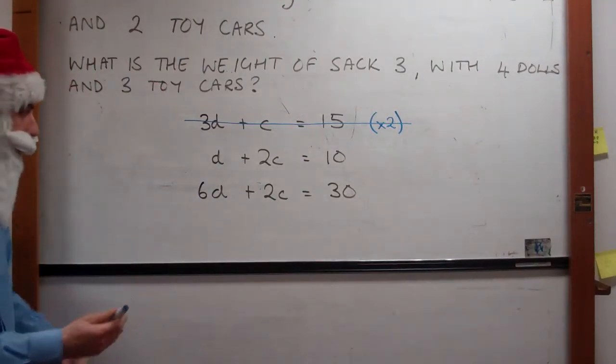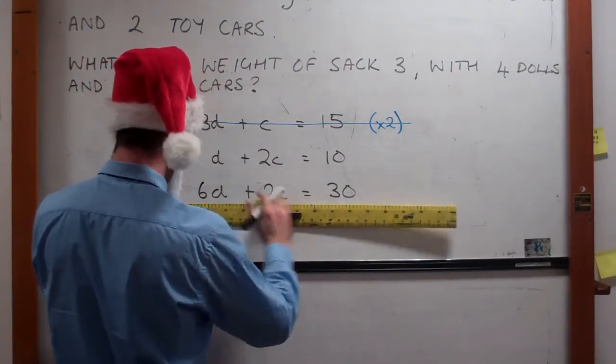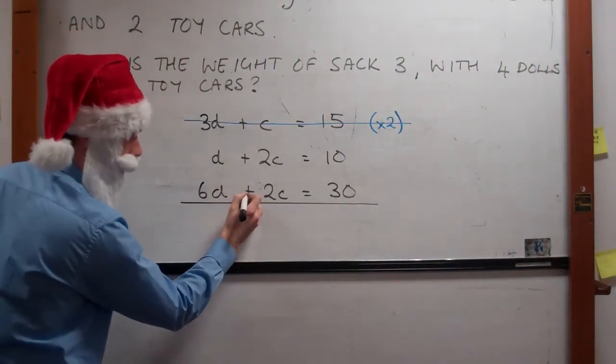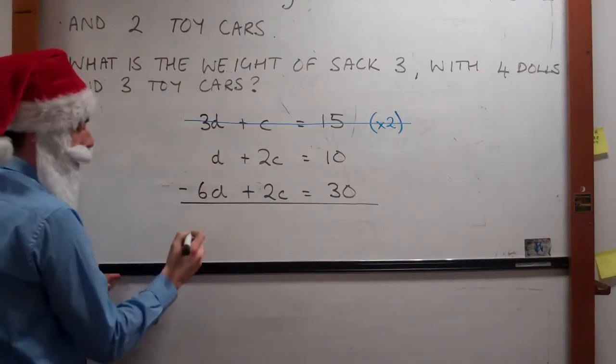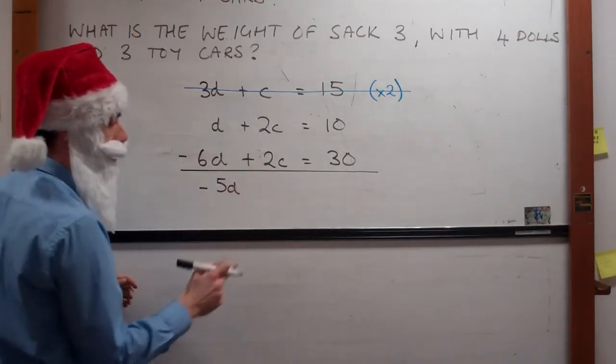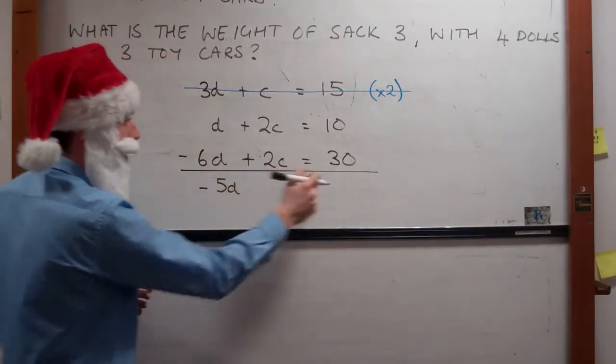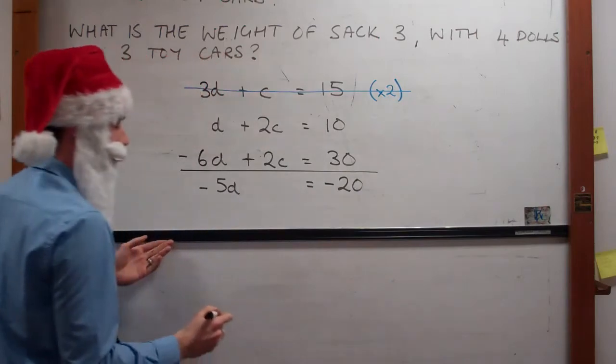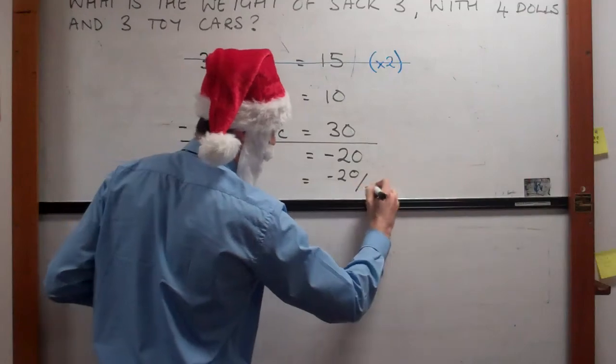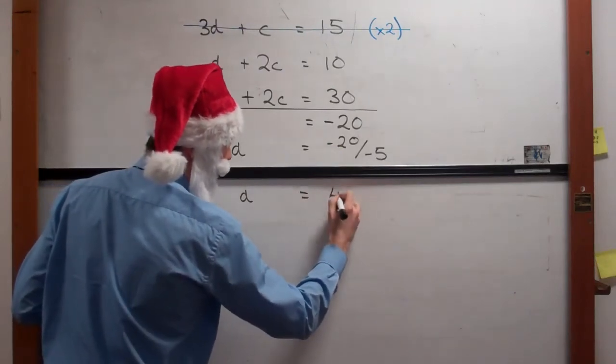Our next step is we're going to try and eliminate our C term. We draw a line, and because the signs are the same here we're going to subtract. D minus 6D gives us negative 5D. 2 minus 2C gives us nothing, so that checks out. Then we've got 10 take away 30 gives us negative 20. So if negative 5D is negative 20, we want to divide negative 20 by negative 5, and we've got D is 4.